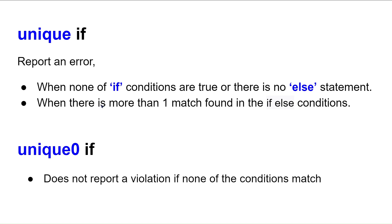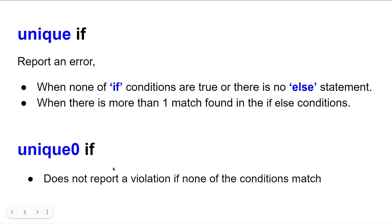Unique zero is similar to unique, but with one key difference: it does not report a violation if none of the conditions match. In unique if, having no matching condition triggers an error, but in unique zero if, that case is silently ignored. The error for more than one match still applies to unique zero.